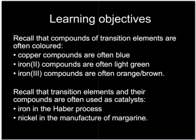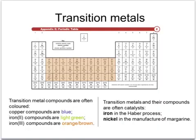We also need to know that they are used as catalysts in a couple of particular instances. Learn these colors: copper compounds blue, iron(II) compounds light green, iron(III) compounds orange and brown. Transition metals and their compounds are often catalysts. For example, we've met iron, which is used in the Haber process. And those who do triple will know that nickel is used in the manufacture of margarine.